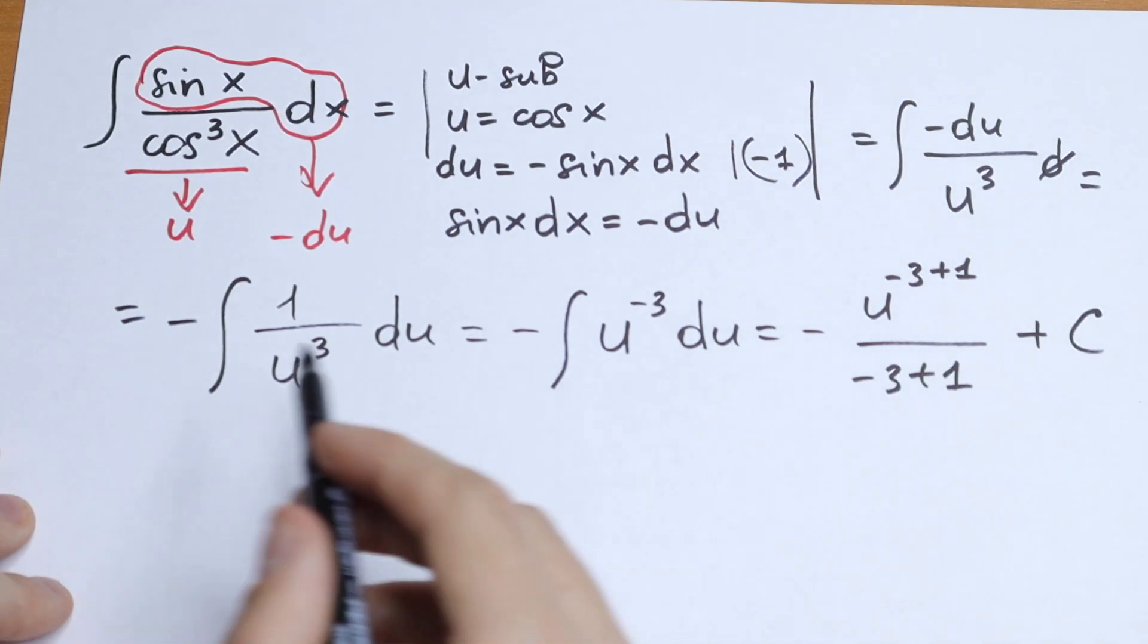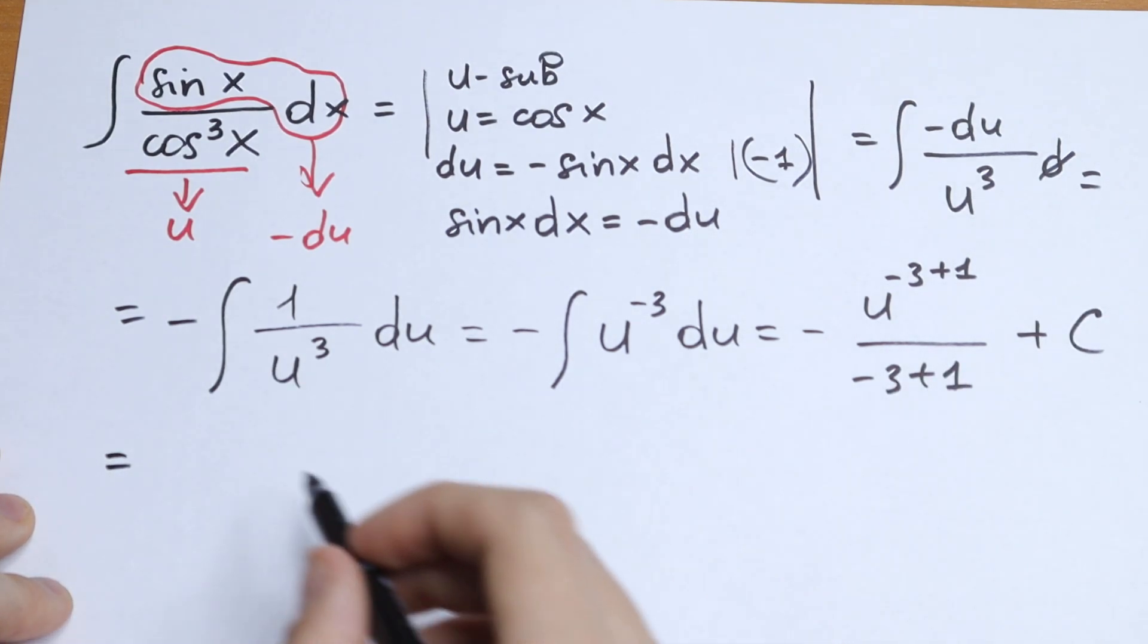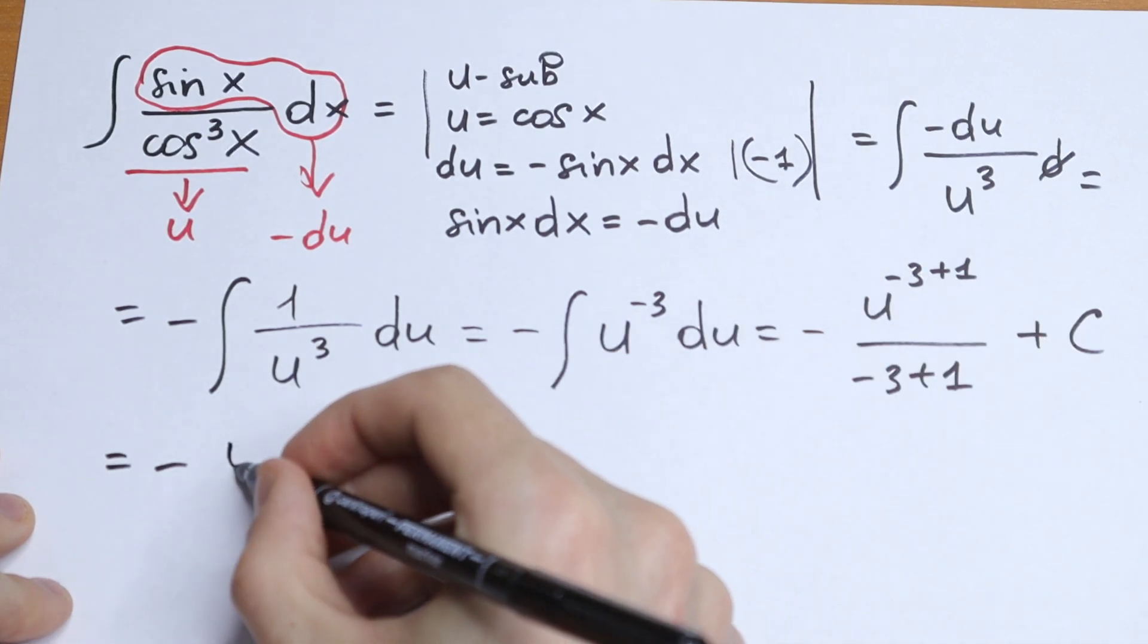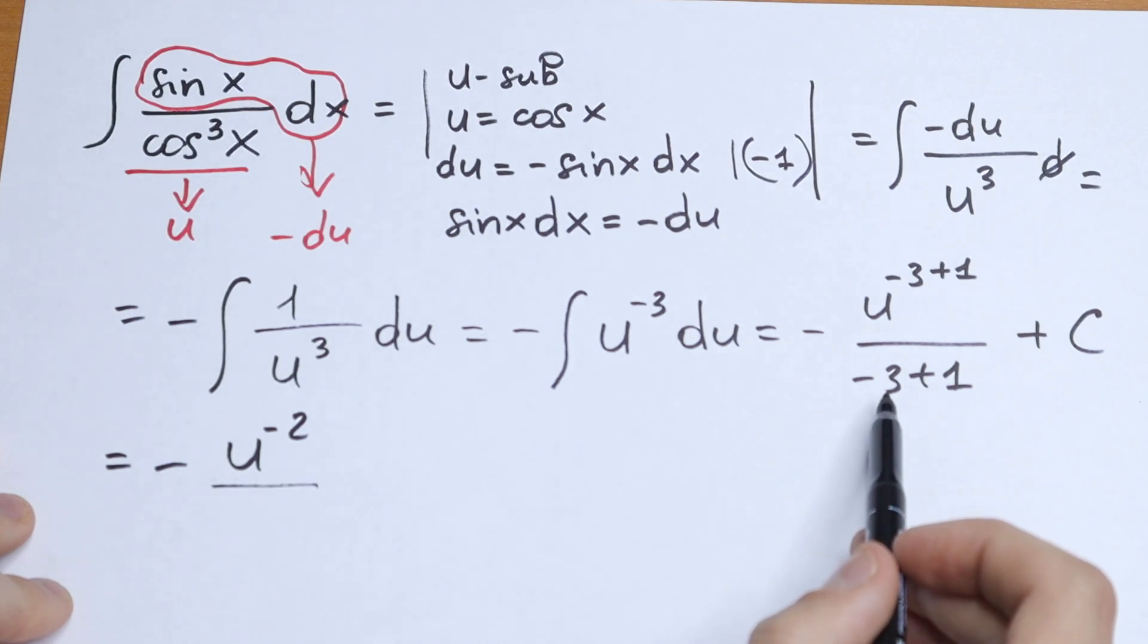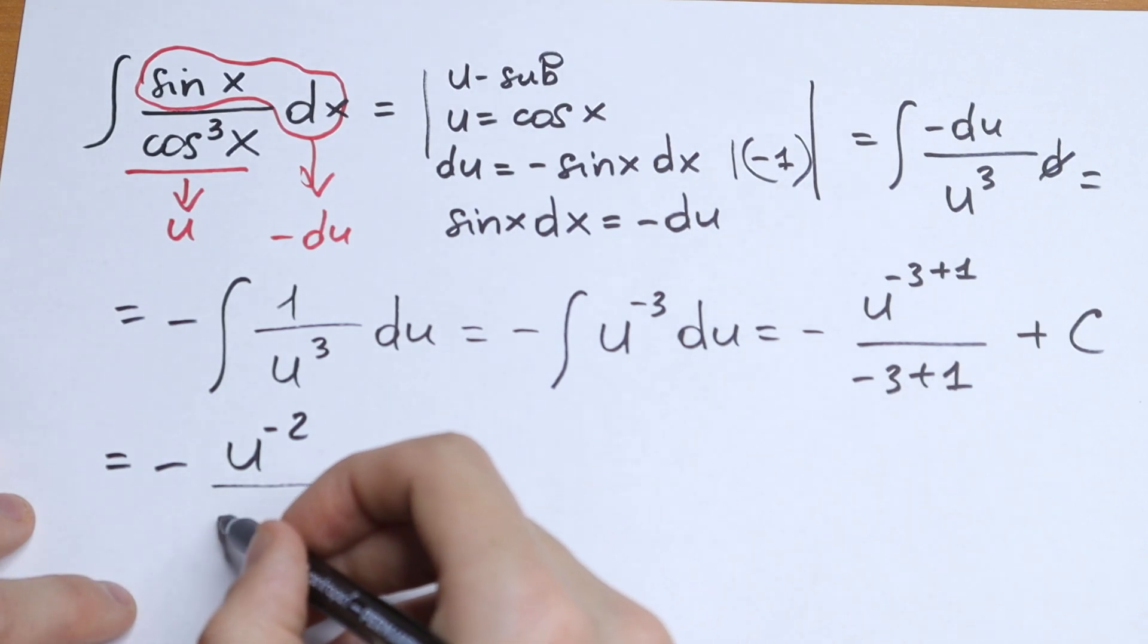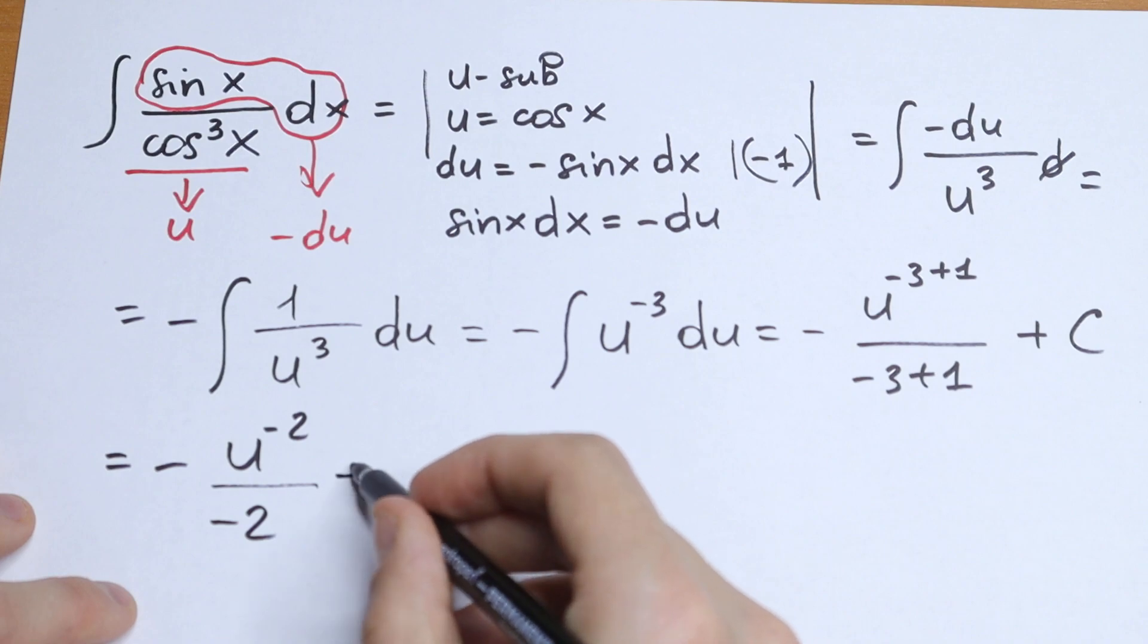So what's the result we will have? Let's simplify this. We will have minus u to the power minus 2 in our numerator. And in our denominator we will have minus 2 as well. And plus c.